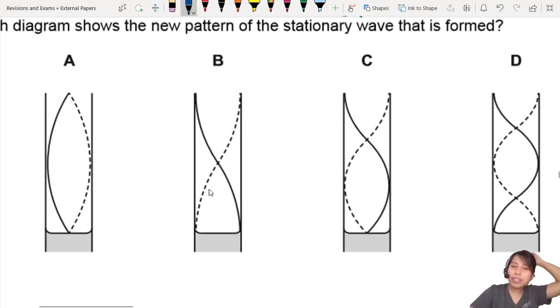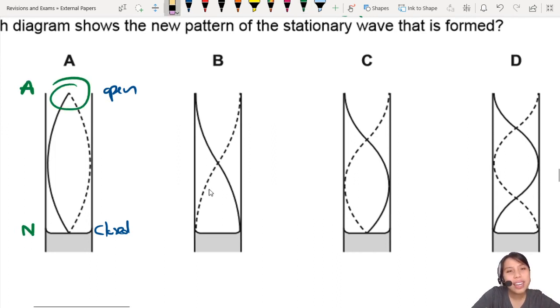Remember the conditions? If this is a closed end and this is an open end, then this must be a node and this must be an antinode at the end. But what is this? Excuse me, this is not correct. Why do you draw a node there? Nah, nah, nah, nah—wrong.